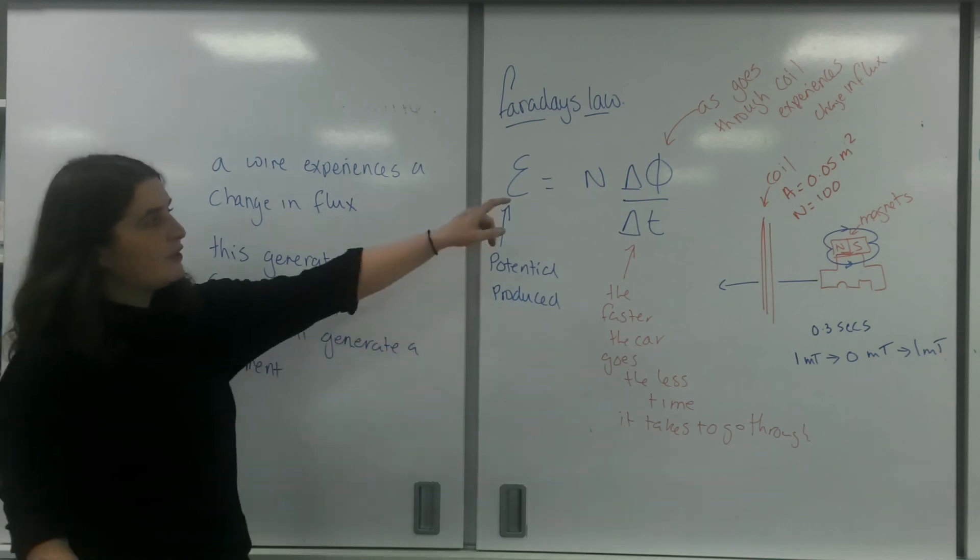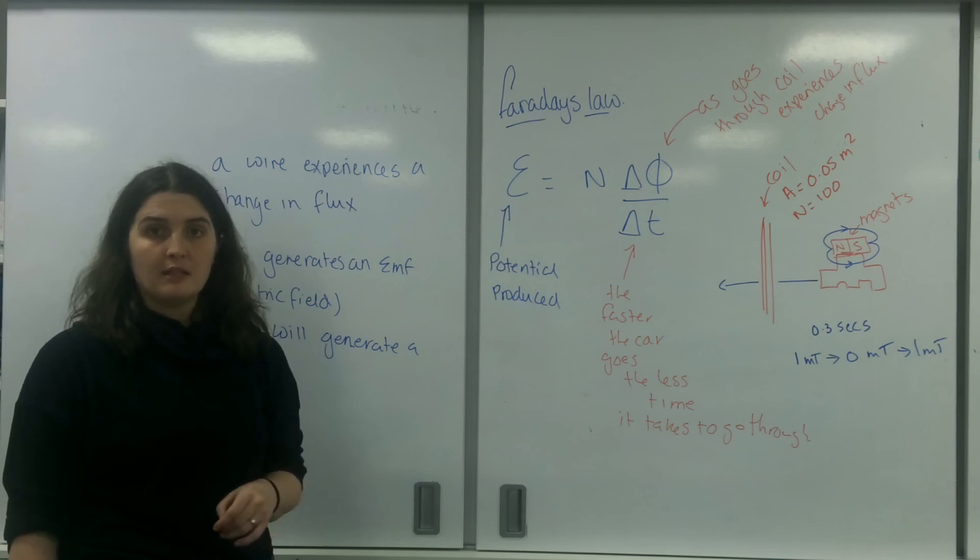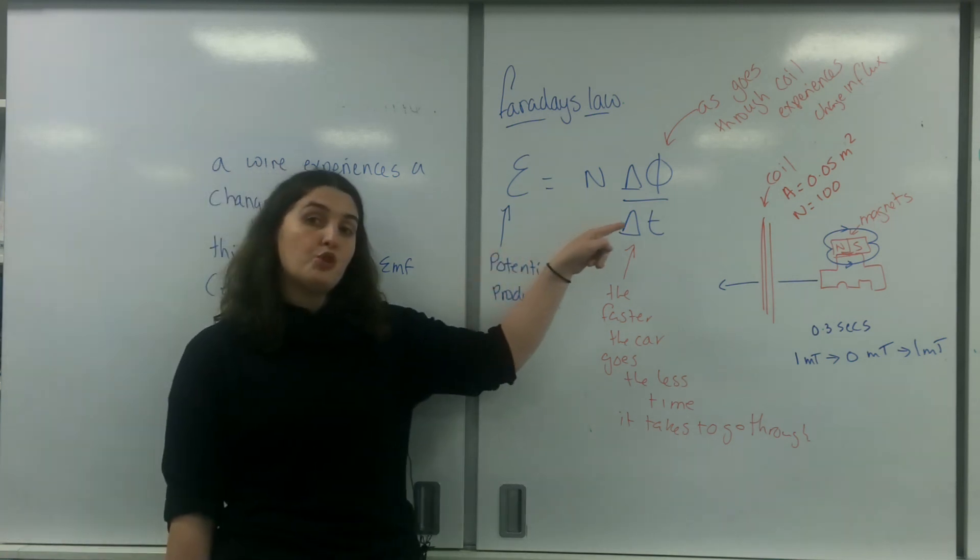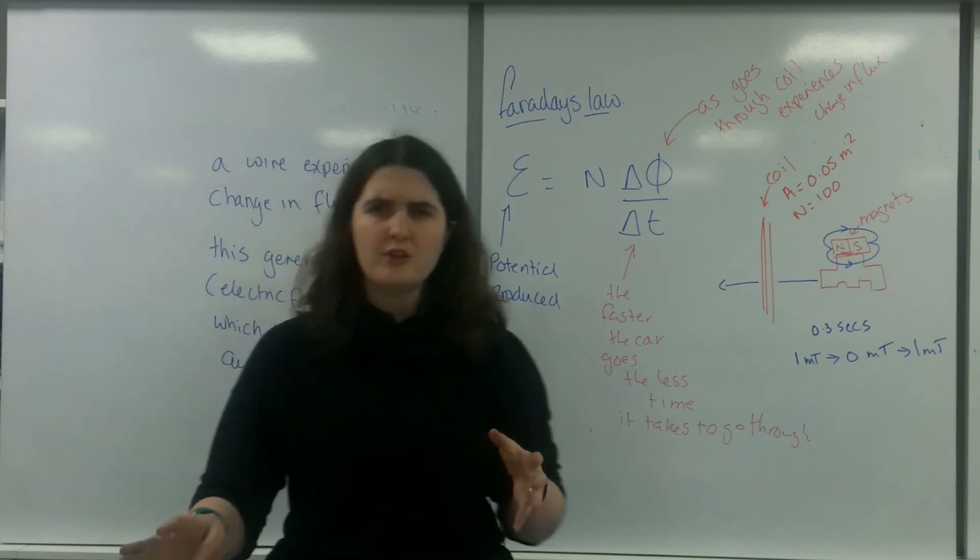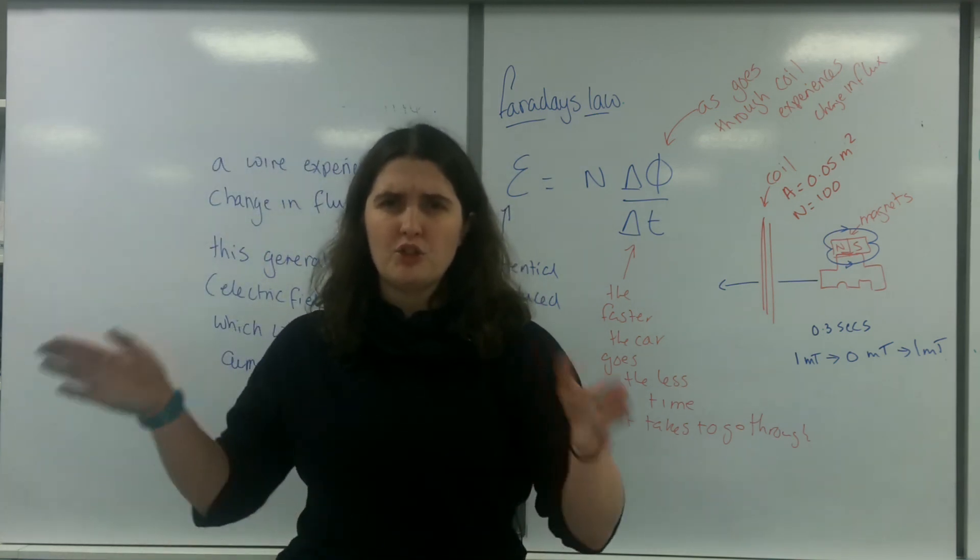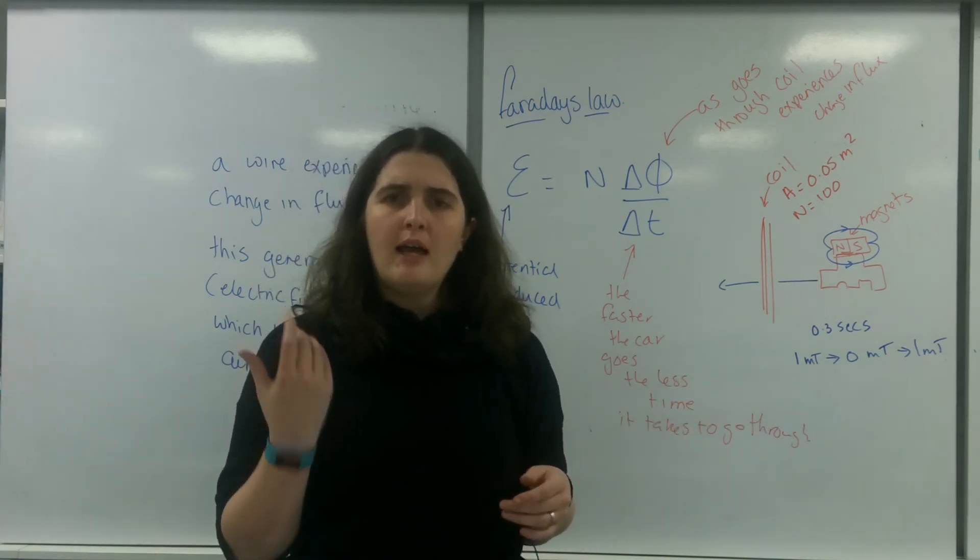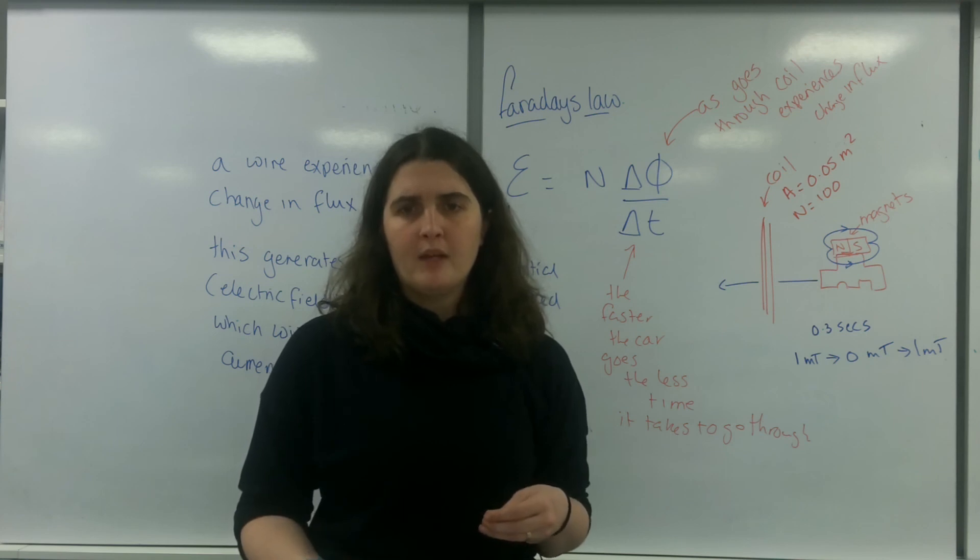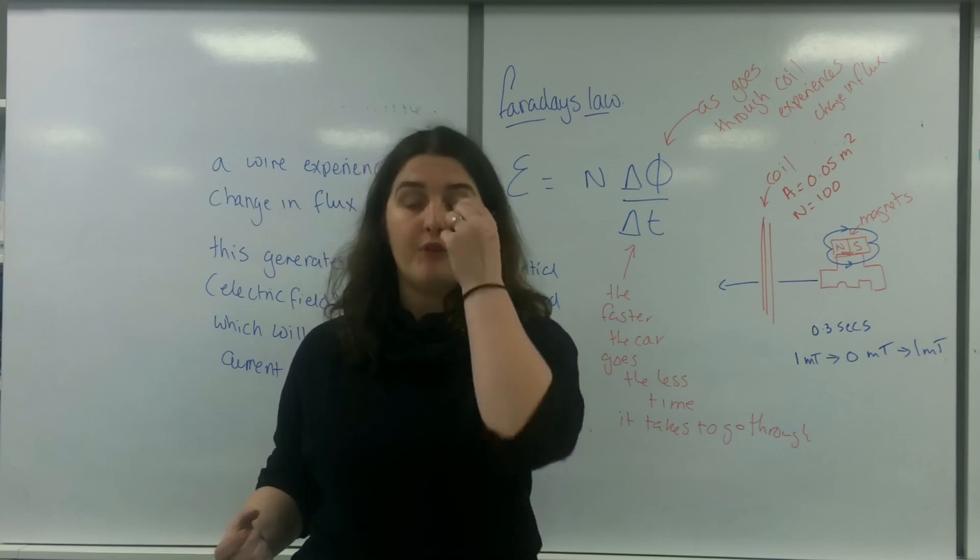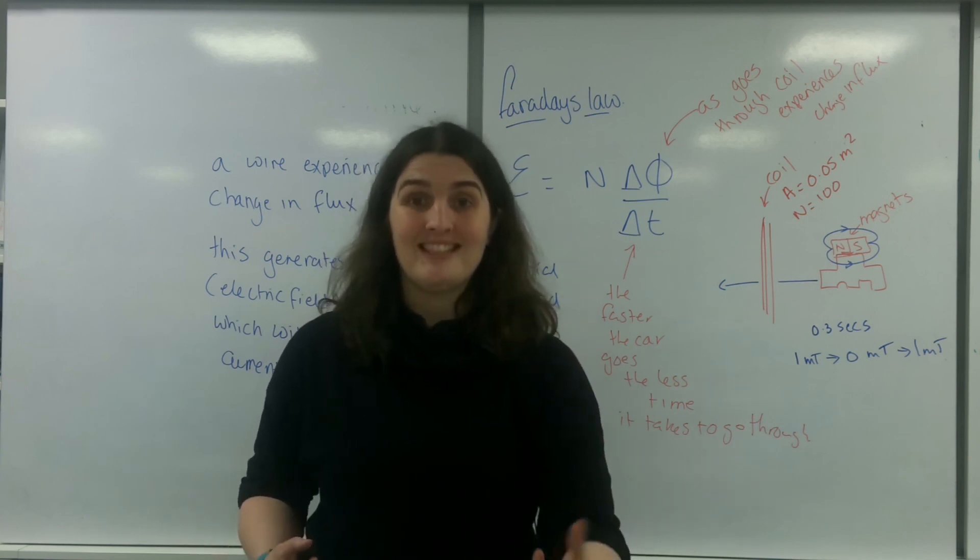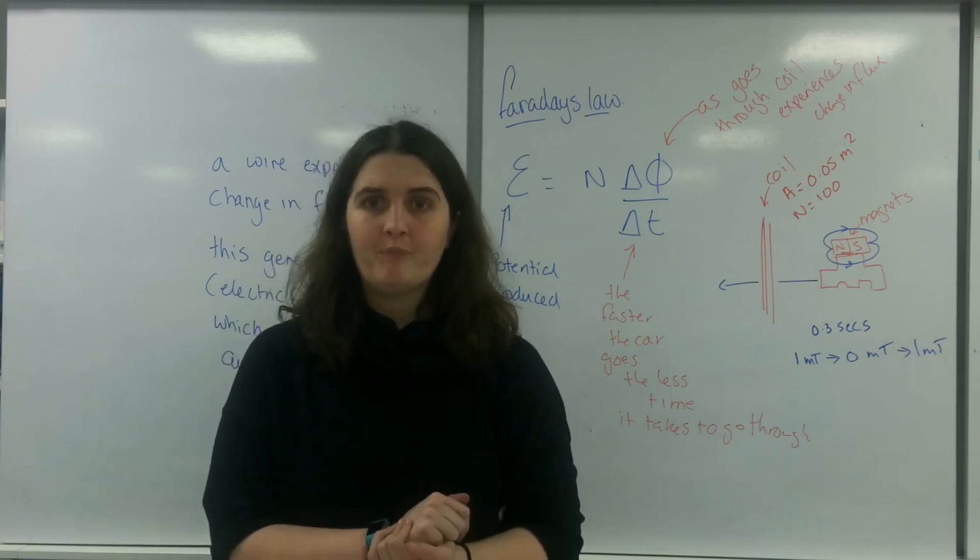The bigger the change in flux, the bigger the EMF you generate. The faster you do it, so the change in time, the faster that you do it, so time decreases because you're doing it faster, the more EMF that you would generate. And the bigger the potential difference that you make, the more current will flow, the more electricity that you make. And that is Faraday's law.